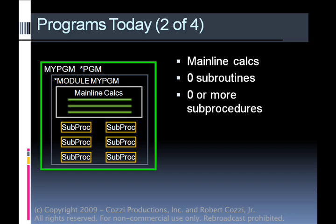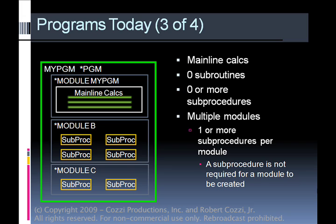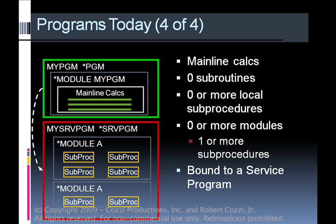Where we're trying to get to is programs that still have mainline calcs but only subprocedures — no more subroutines. That is the challenge for the RPG programmer. A really good application design allows a program to contain multiple modules: one module has the mainline calcs isolated, and additional modules contain all the subprocedures needed. We can go one step further and move those subprocedures into a service program, so the main application has only mainline calcs and connects to a service program with all necessary subprocedures.